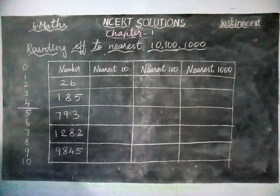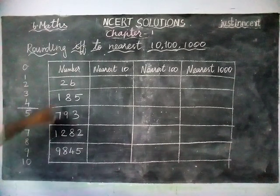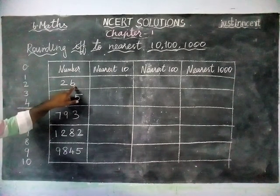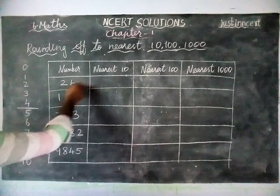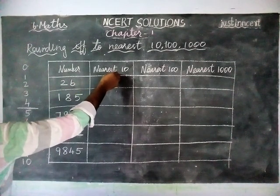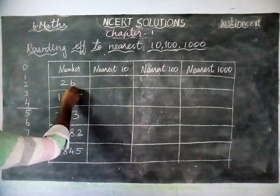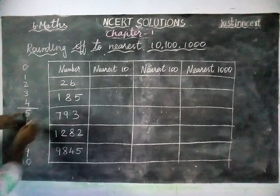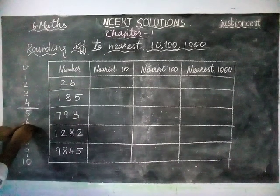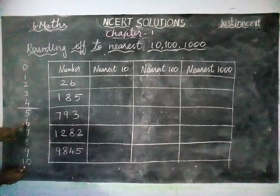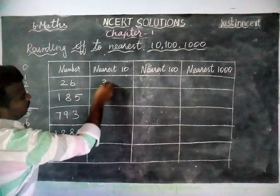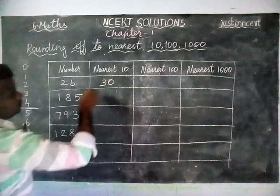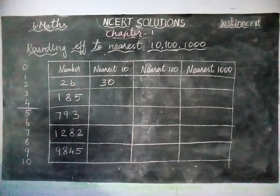Listen here. We are having the number 26. In 26, the last digit — the ones place — is 6. We are going to round off to nearest 10. The digit 6 falls in the 5–9 range, so nearest 10 is the next 0. The rounded off number is 30. So nearest 10 is equal to 30.